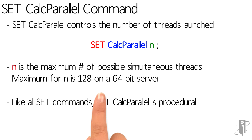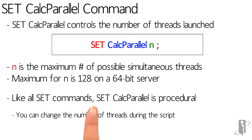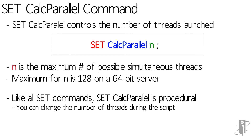It's worth pointing out that the setCalcParallel command is what's called a procedural command, just like all SET commands in Essbase calc scripts. That means at the top of your script you might want to use 128 CPUs, and then farther down you might only want to use four or eight CPUs. You can just have another setCalcParallel line and it will change the thread count further down your script.